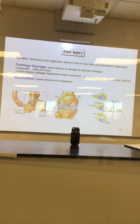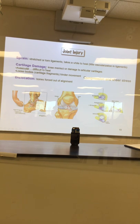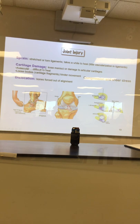Loose bodies: with cartilage tears there will be little bits broken off — like the princess and the pea — floating around inside the joint cavity, or even a piece of ligament flopping around in there. Every time you step, they release inflammatory chemicals.